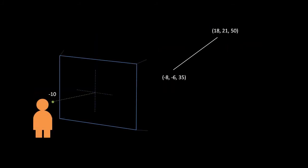Just to be complete, let's look at an example in all three dimensions. Here we have a line running from negative 8, negative 6, 35 to 18, 21, 50, and our camera is 10 units away from the viewplane. The scaling factors for these two points are then 10 over 45, which is about 0.222, and 10 over 60, which is about 0.167.